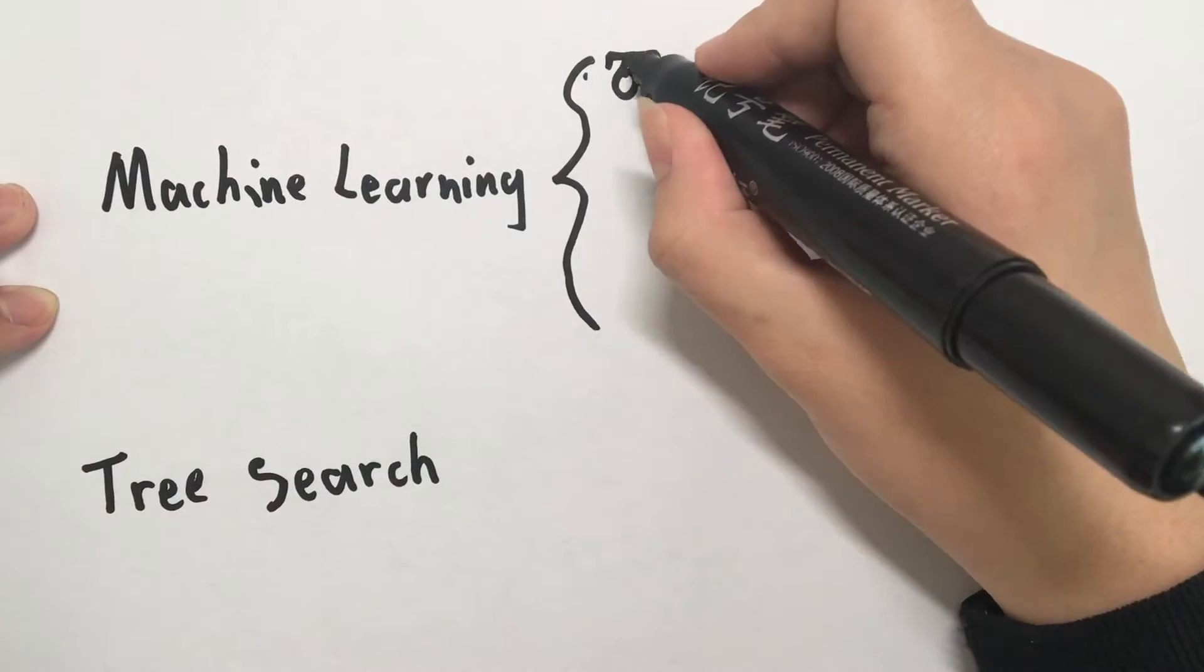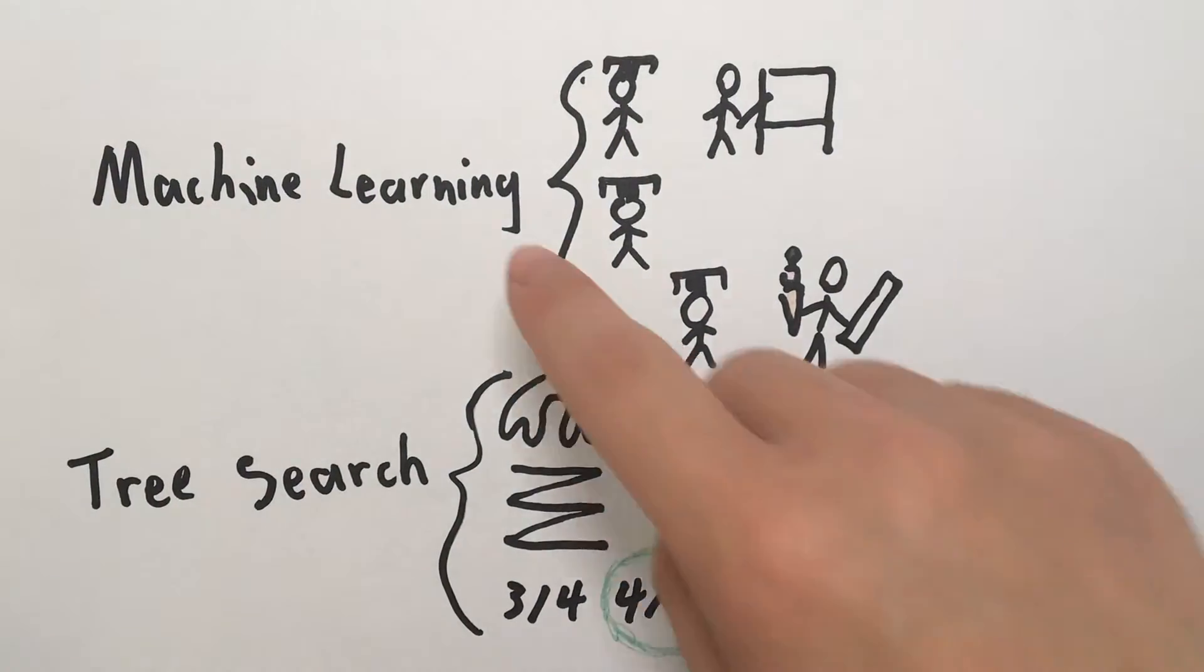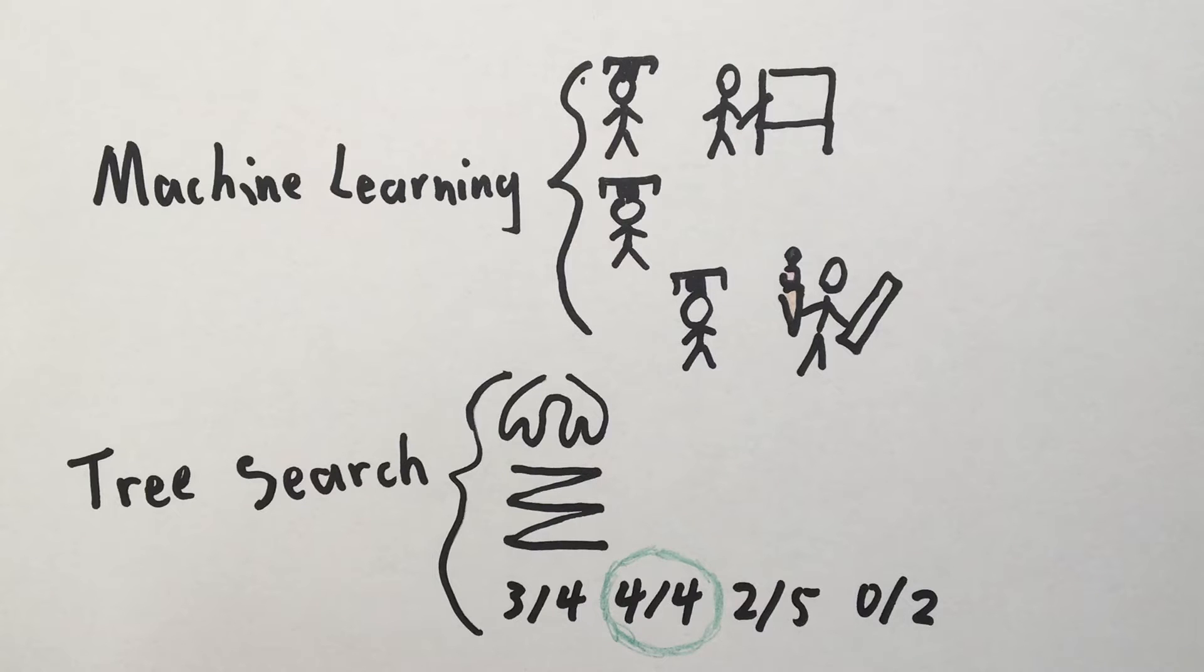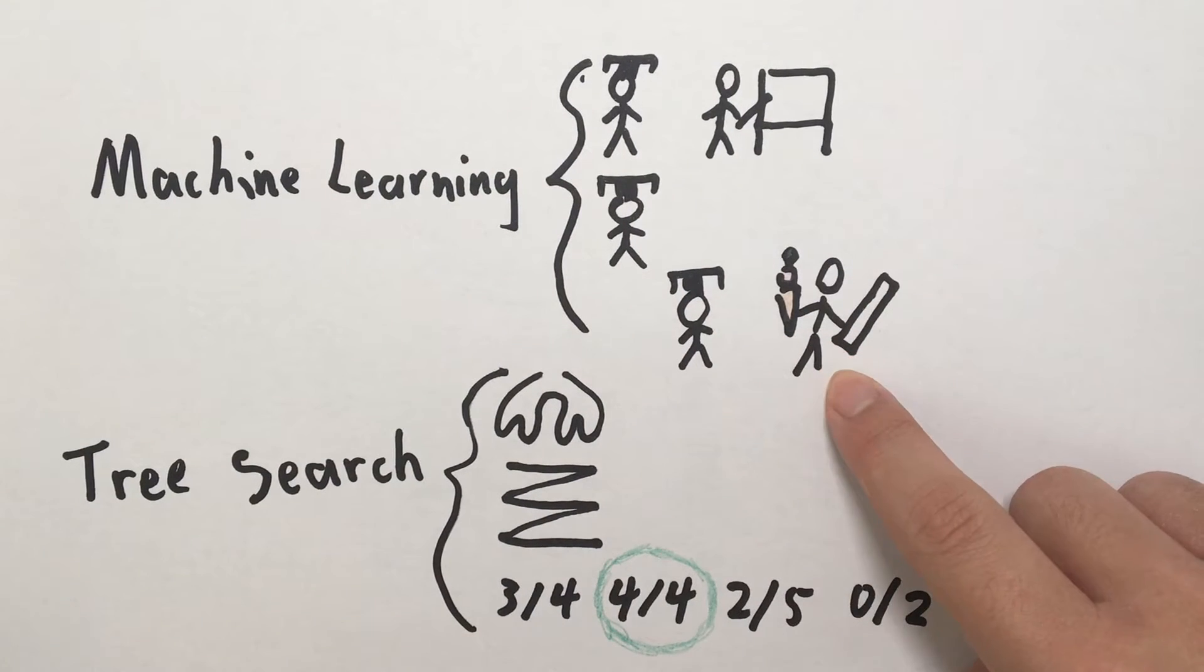In particular, AlphaGo achieved its success through machine learning and a tree search. Machine learning is the result of a decentralized algorithm. There are three types: supervised, unsupervised, and reinforcement learning.